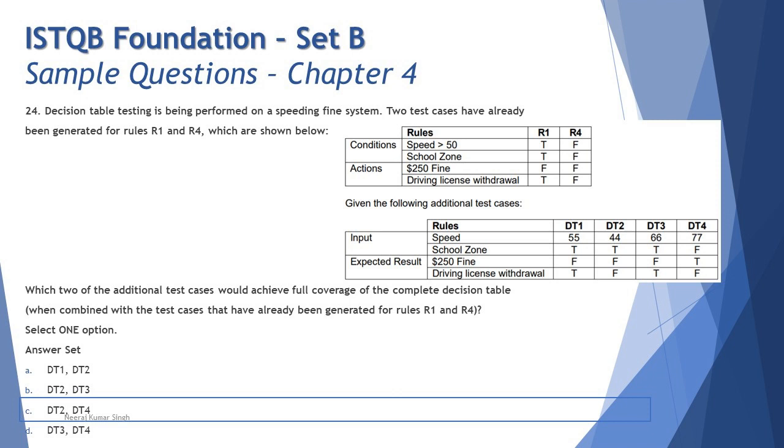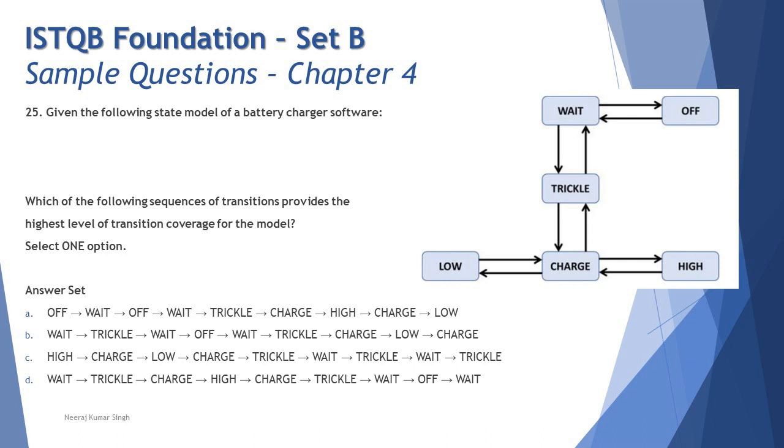Let's step into the next question. We are talking about state transition testing. This is equally a tricky one, but again if you follow the logic of state transition testing, you would be able to solve this very quickly. Question number 25: Given the following state model of battery charger software, which of the following sequences of transitions provides the highest level of transition coverage? Please remember, when such type of questions appear, you have to be careful whether they are asking you to cover the states or the transitions. Here they are talking about transitions. So the very first thing you should immediately do is count the number of transitions in the given diagram. There are 1, 2, 3, 4, 5, 6, 7, 8, 9, 10. There are 10 arrows and each arrow represents a transition between two states.